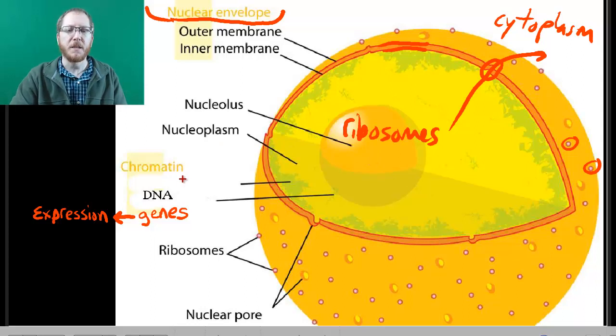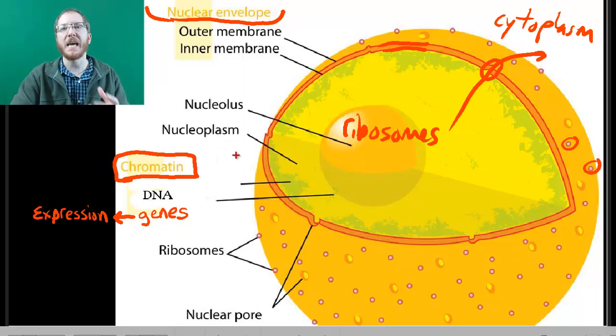And this DNA is going to be typically present as chromatin. And so chromatin is just going to be a loose mixture of DNA and proteins that you'll find. And this is what a normal cell contains.